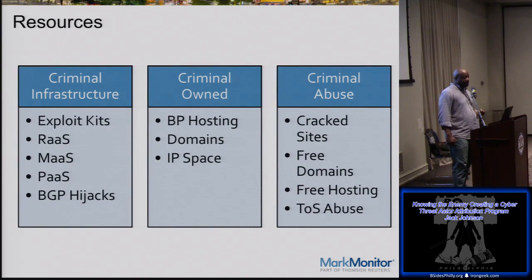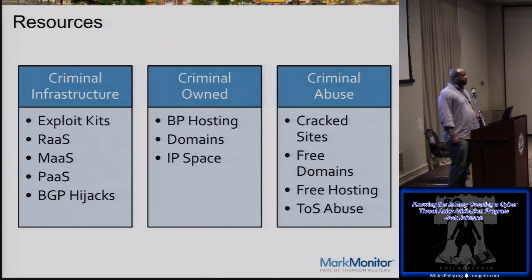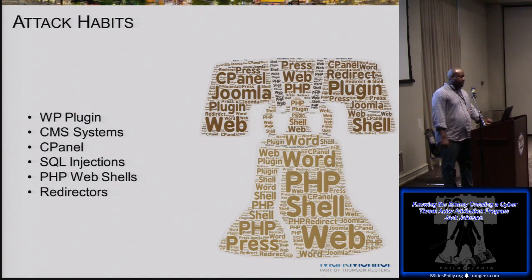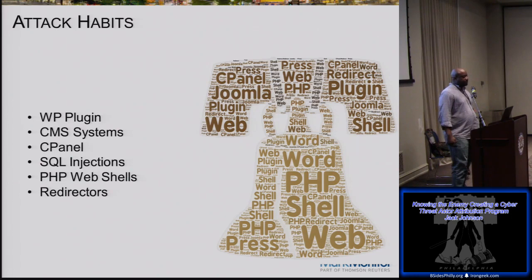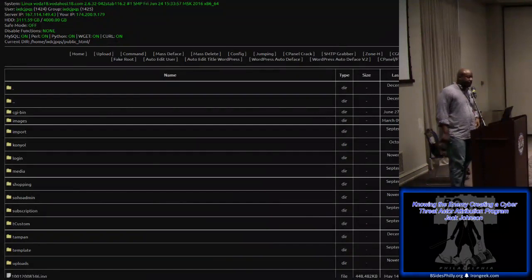Today it's very easy to get into cybercrime because of ransomware-as-a-service and malware-as-a-service — they even have phishing-as-a-service. For example, the Locky ransomware author takes only 15% of the profit while anyone who distributes Locky receives 80-85%. We also look at attack habits: some threat actors like to exploit WordPress plugins, others break into CMS systems like Joomla, WordPress, or Drupal. Some favor compromising cPanel control panels, others use SQL injection. PHP web shells are also very popular — once installed, they give root access to a server through a web browser, and you don't even need to know Linux to use them.